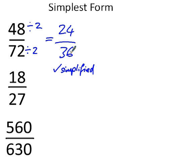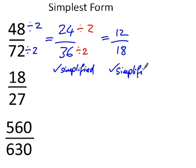It's not in simplest form until you cannot simplify any further. In practice, that means keeping going until there are no common factors in the numerator and denominator — except for 1, which is a common factor of any pair of numbers but isn't useful to divide by. For 24 and 36, they both divide by 2, giving us 12 over 18.